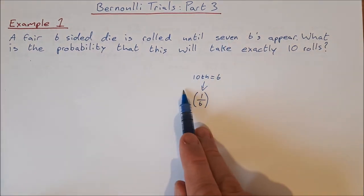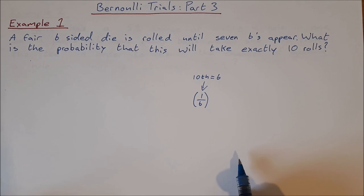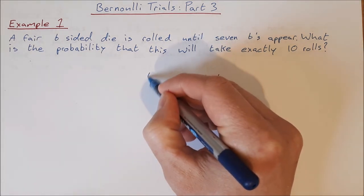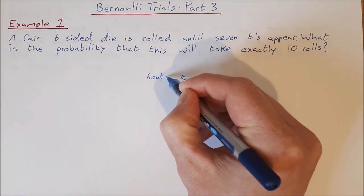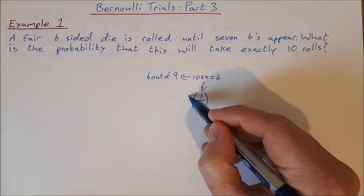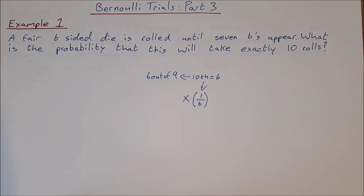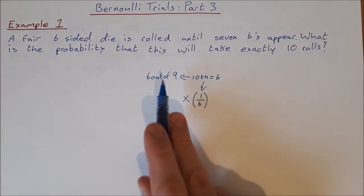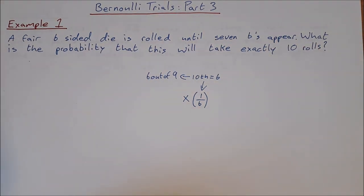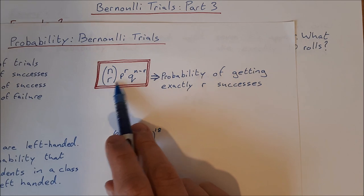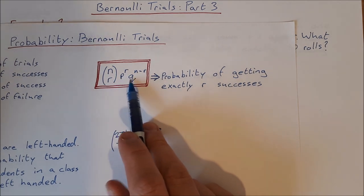In order for the rest of this to work, we need to get six sixes in the previous nine rolls, and it doesn't matter what order they come in. So in the previous nine rolls, we need six out of nine. We multiply that by this one-sixth. Six out of nine is just going to be a Bernoulli trials calculation using our formula.